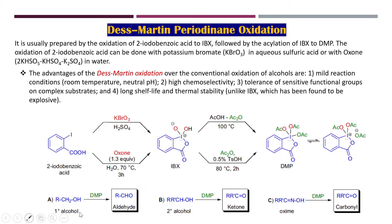When DMP is treated with a primary alcohol it leads to the formation of an aldehyde; when a secondary alcohol is used it leads to the formation of a ketone; and when an oxime is used it also leads to the formation of a ketone.